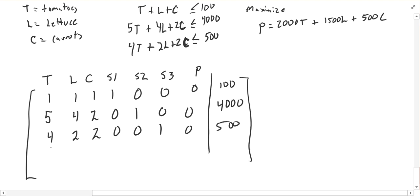And then for my objective function down here at the bottom, I'm going to move everything over to the left-hand side. So I'll have minus 2,000, minus 1,500, minus 500, 0, 0, 0, 1, and then 0. Let me kind of clean this up here a little bit. Minus 1,500 in there.